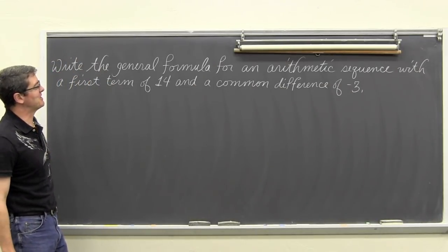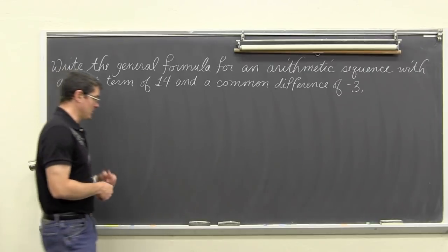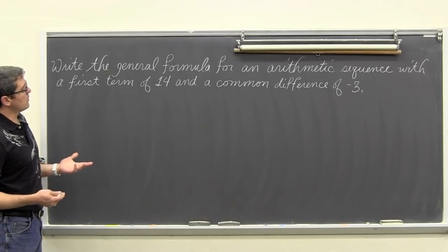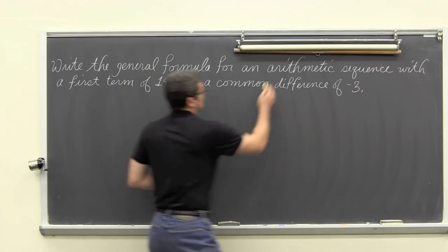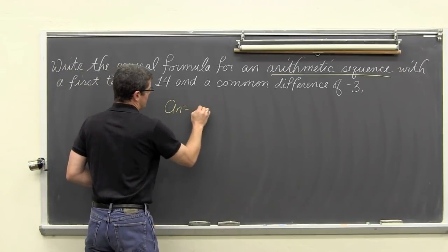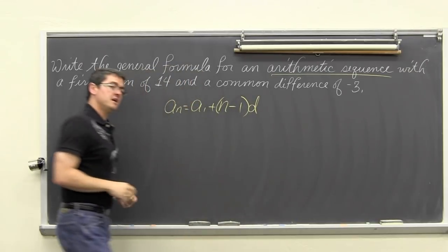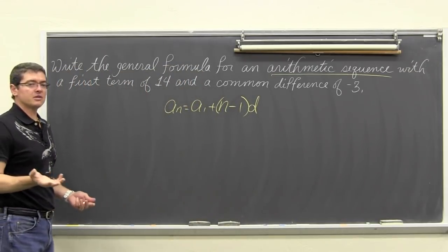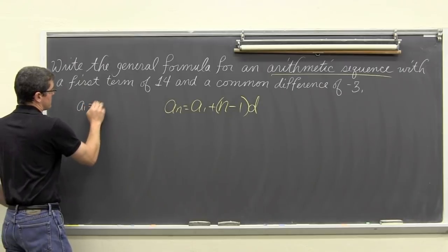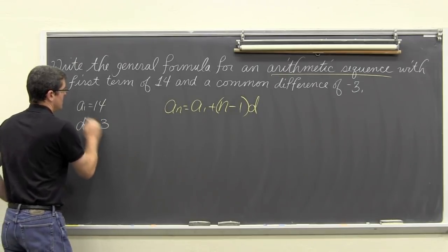Write the general formula for an arithmetic sequence with a first term of 14 and a common difference of negative 3. Very similar to the previous example except they wrote it out in sentences without giving you the actual numbers. Since we are told that it is arithmetic, we can go ahead and write that general form out: a sub n equals a sub 1 plus n minus 1 times d. The first term of the sequence is 14, so a sub 1 equals 14, and the common difference is negative 3, so d equals negative 3.